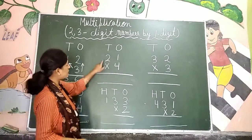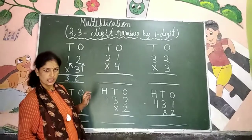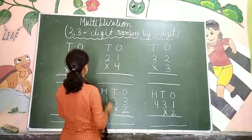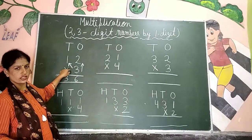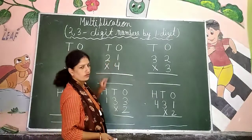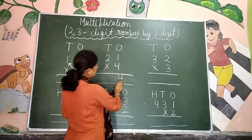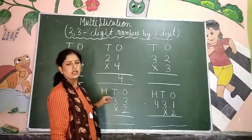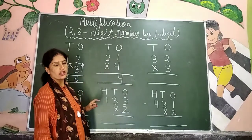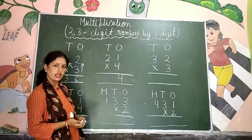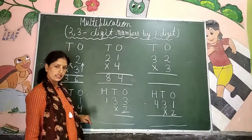Now second question is 21 multiply by 4. This is again a 2-digit number by 1-digit. So पहले ones के साथ ones — 4 ones are 4. So we will write 4 just below ones. Ones के बिल्कुल नीचे 4 लिखेंगे. 4 twos are 8. So the answer is 84 — बिल्कुल tens के नीचे. Understood?